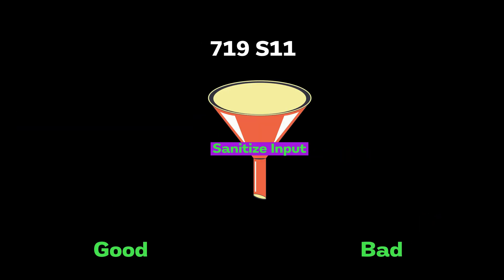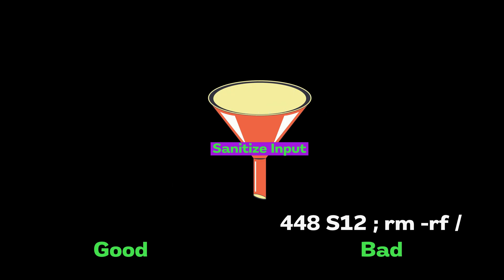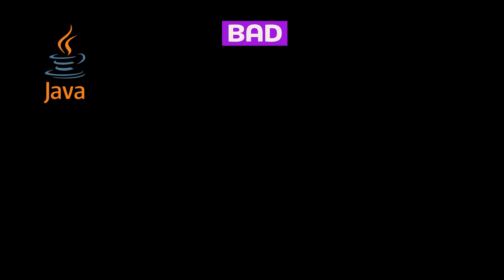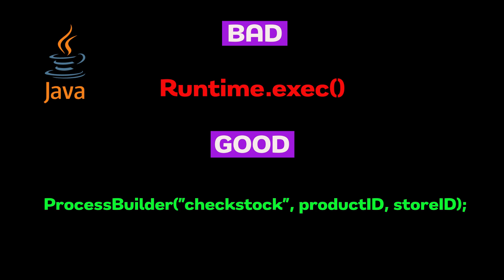So how do you stop this? First, don't trust user input — ever. Always sanitize it and make sure it's exactly what you expect. In Java, avoid runtime.exec and switch to something like ProcessBuilder, which separates commands from arguments. This treats those inputs as arguments, not as part of the command, preventing dangerous injections.